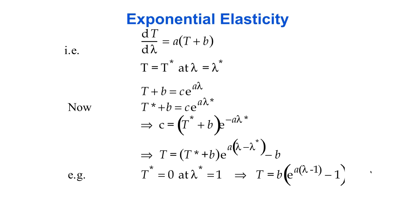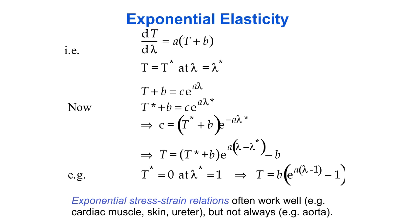So the observation that the tangent modulus — the derivative of stress with respect to stretch ratio — is proportional to the stress leads us to the result that the stress-strain relationship is exponential. This exponential stress-strain relation works well for many tissues including cardiac muscle, skin and ureter, but not all tissues. For example, ascending aorta is not well described by a single exponential function.